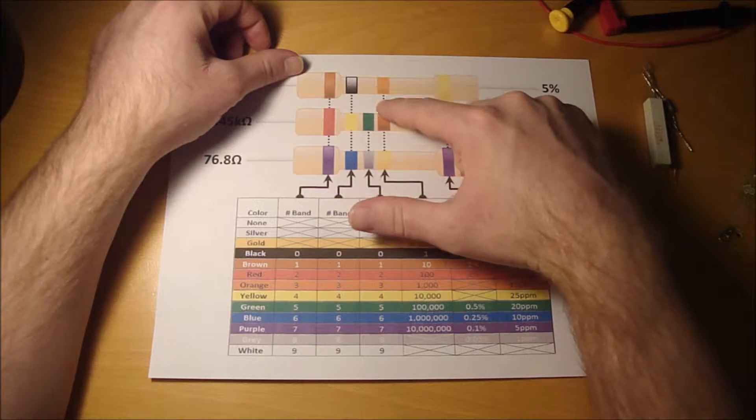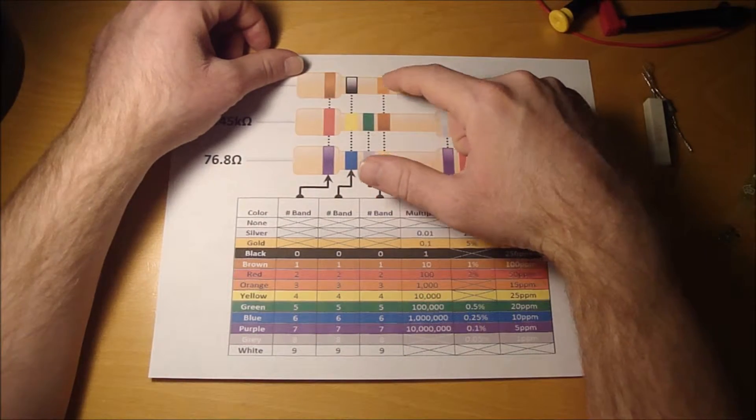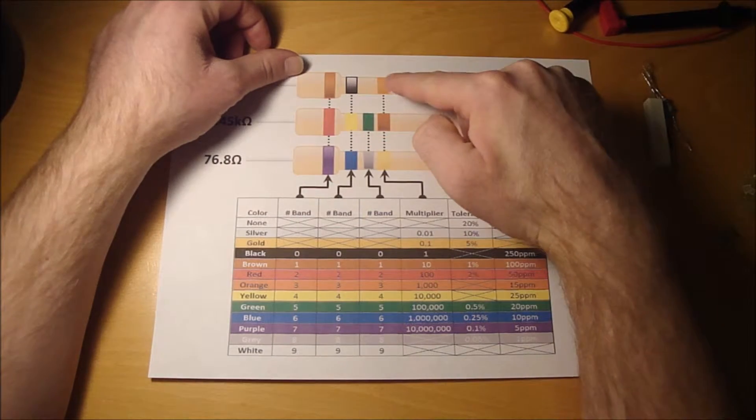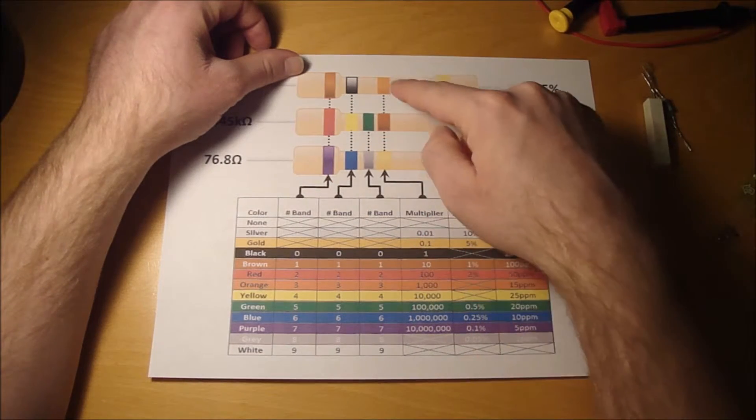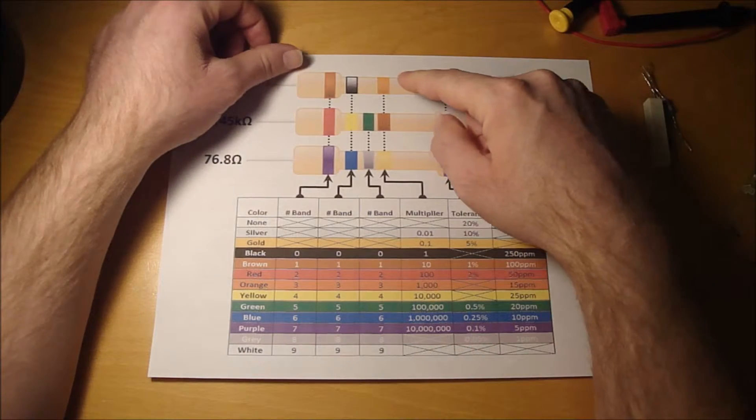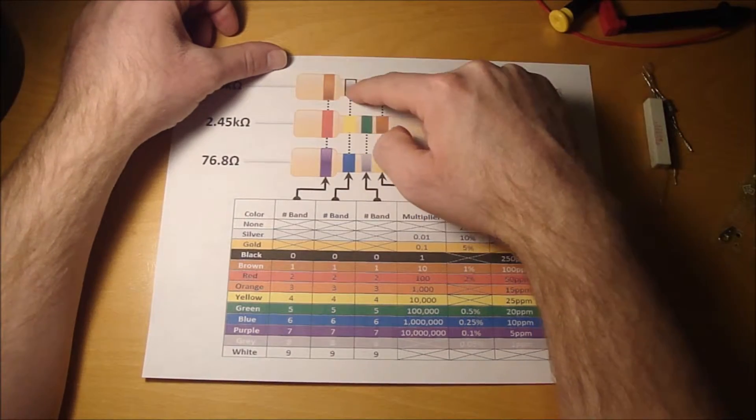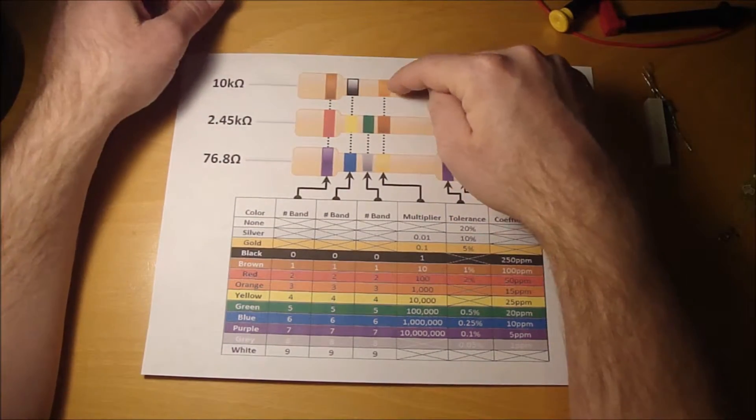And then this third band is a multiplier. So you take the first two number bands times the multiplier, which is orange, one thousand, to get the value of this resistor. So it would be one zero times a thousand, which is ten kilo ohms.